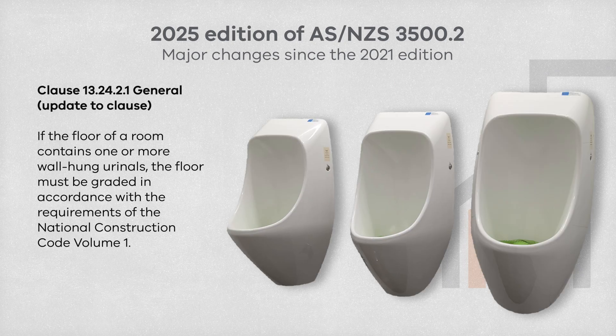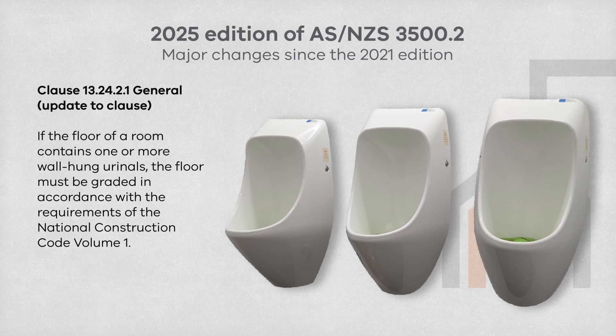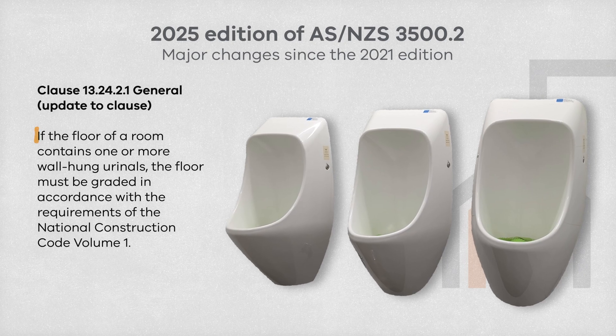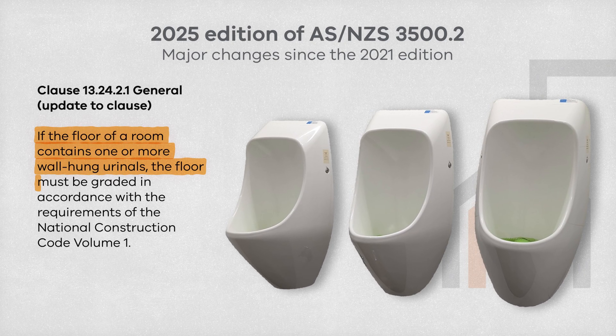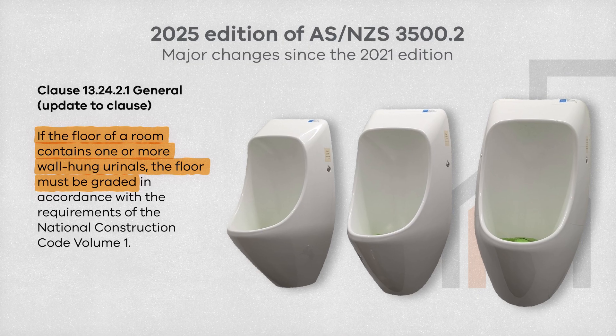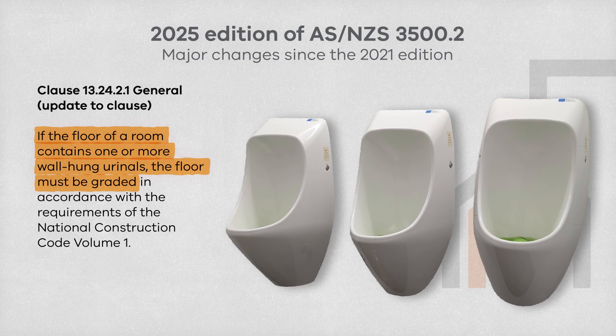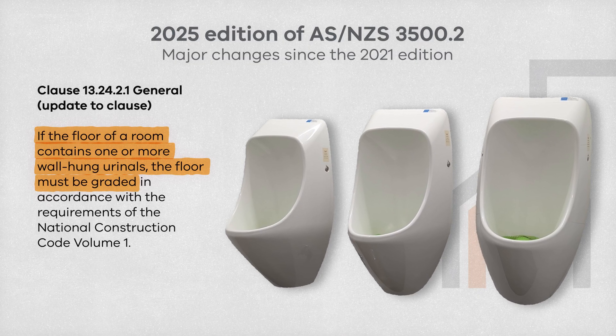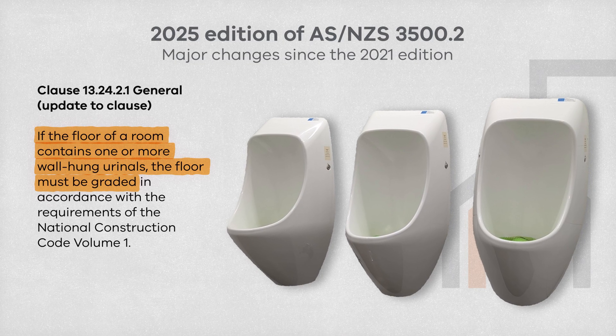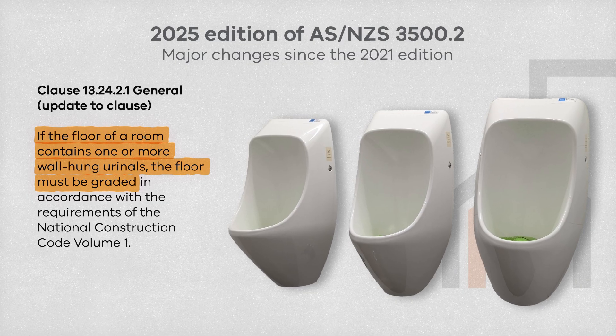There are new guidelines that have been introduced for the installation of waterless urinals. Please note that where a room contains one or more wall hung urinals, the floor must be graded in accordance with the requirements set out in Volume 1 of the National Construction Code. This means that plumbers should coordinate with their builder regarding these requirements.